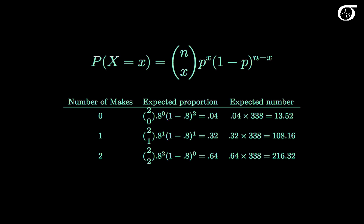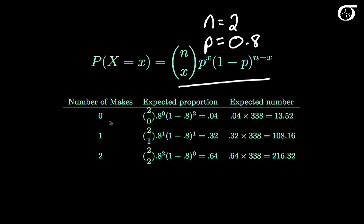Now let's calculate the expected counts under the null hypothesis — what we would expect to get on average if the null hypothesis were true. Using the binomial formula with n=2 and the hypothesized p=0.8, the expected proportion for 0 makes is 0.04, meaning around 4% of the time we'd expect him to miss both. 32% of the time we'd expect him to make one and miss one.